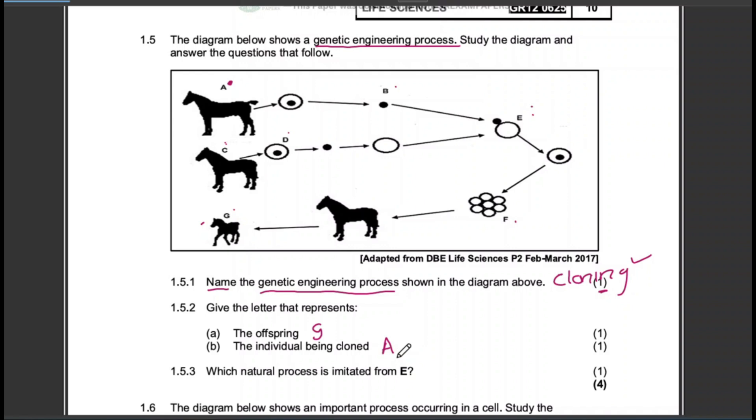Last question: which natural process is imitated from E to D? So the process that is basically imitated is fertilization.